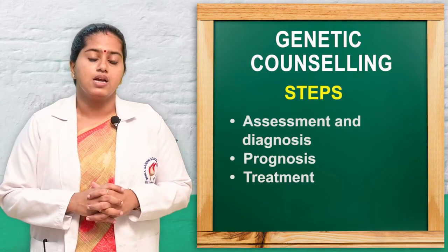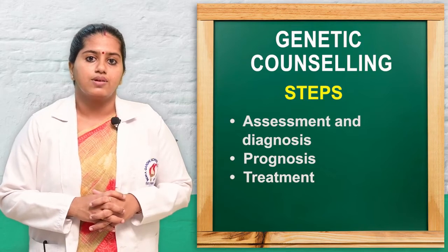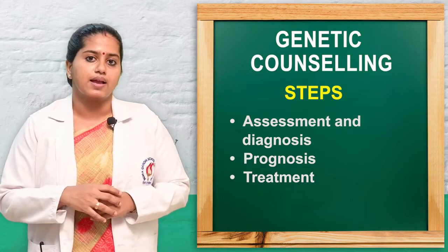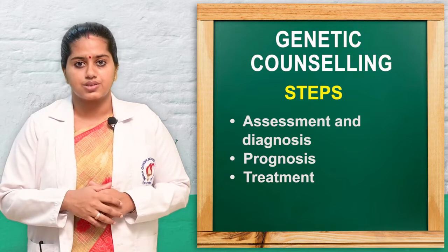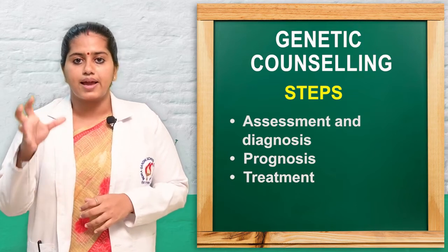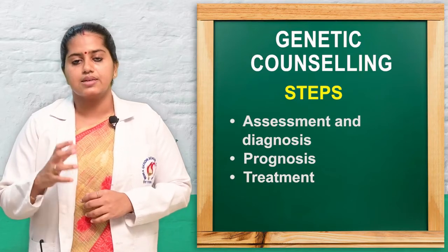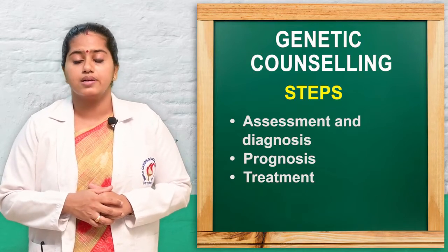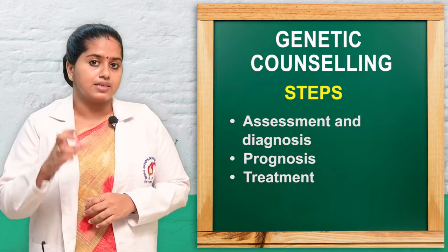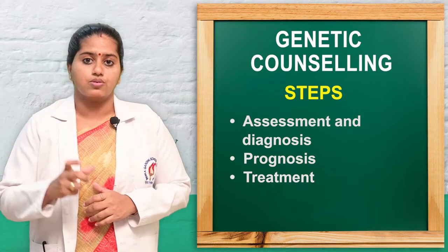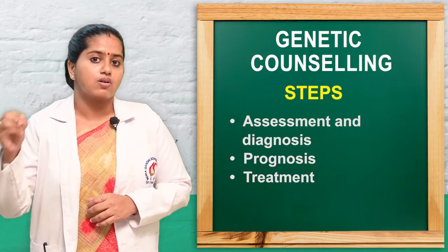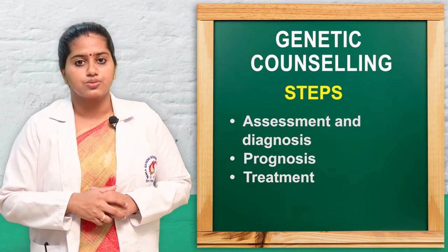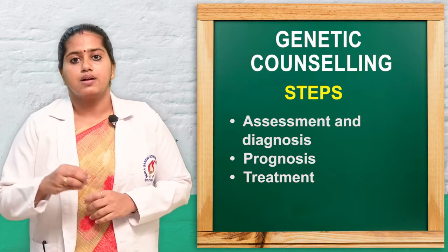The steps of genetic counseling are as follows. Step one is assessment and diagnosis: the individual, family members, or couple are selected and detailed histories and physical examination are done, and a proper diagnosis of genetic disorders is made. Step two is prognosis: counselors provide detailed education about what the disease is, its type, its prognosis, its impact or complications, and what can happen because of it.